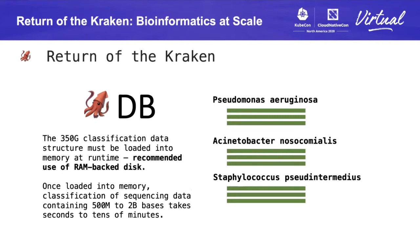On top of that, Kraken requires a reference database to compare each subsequence against. That Kraken database can vary in size based on the number of organisms you want to classify and how confident you want to be in your classification. Our database at Day Zero contains primarily the bacteria we're most interested in and comes to 350 gigs in total size. That entire database is loaded into memory at runtime using a RAM-backed disk, which allows us to keep the database in memory over multiple executions of the Kraken command line tool. Once that 350 gig database is loaded into memory, Kraken might take anywhere from a few seconds to 10–20 minutes to classify all the reads in a sequencing file.